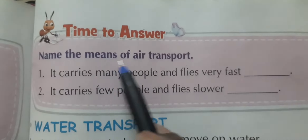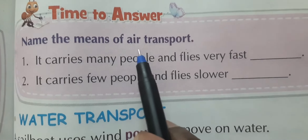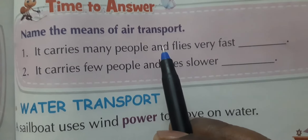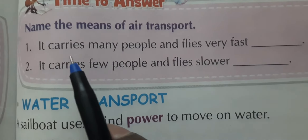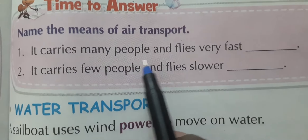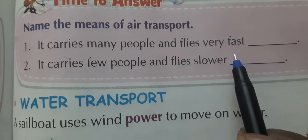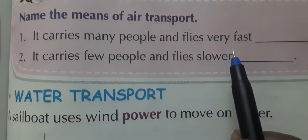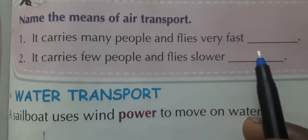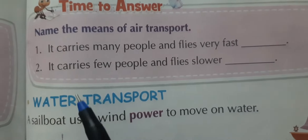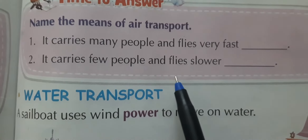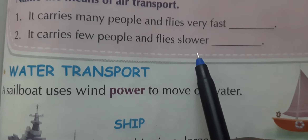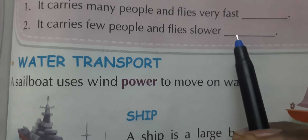Now it's time to answer. Name the means of air transport. It carries many people and flies very fast — that is the aeroplane. It carries few people and flies slower — that is the helicopter.